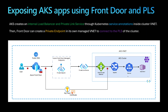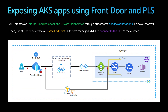That's how you can expose a private service running inside an AKS cluster using a Kubernetes service, an internal load balancer, Private Link Service, and a private endpoint through Azure Front Door. This also works for ingress controllers — the next video will demonstrate how this works with an NGINX ingress controller.